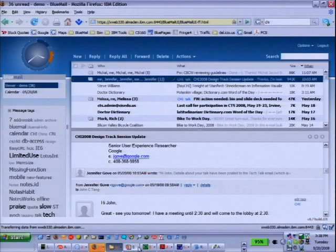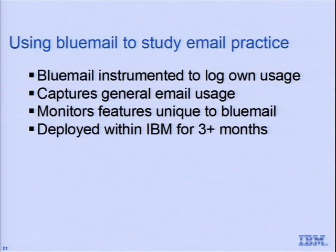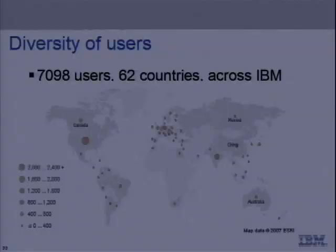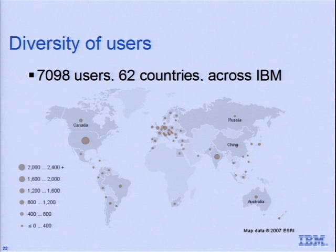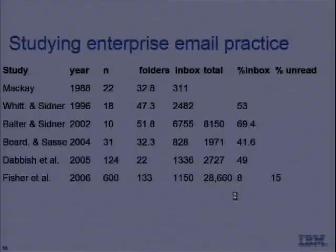Now let's talk about how we've been using BlueMail to study corporate email practice. BlueMail is instrumented to log its own usage — it captures general email usage as well as features specific to BlueMail. At this point we've deployed it for around three-plus months, with over 7,000 users across around 62 countries. There's a geographic visualization showing mostly US users but a large contingent in India, some in Europe, and some in South America.